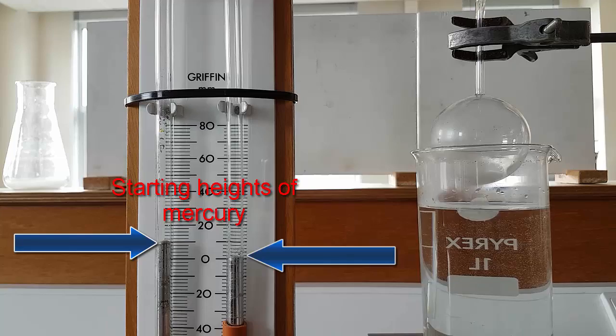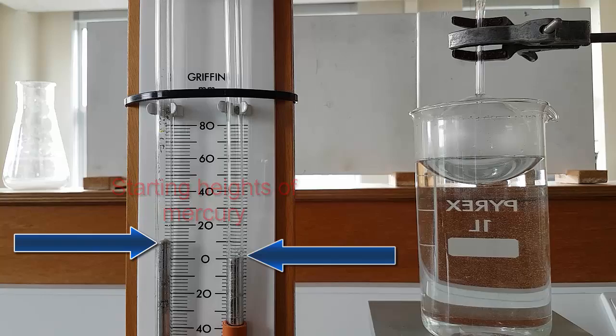Notice we've got the starting levels of the mercury with the two arrows there. As the warm water heats the gas, the gas will expand, which will force the mercury down on the right-hand side and up on the left-hand side.